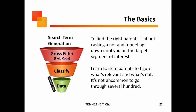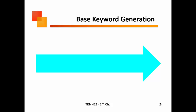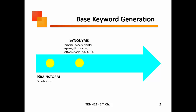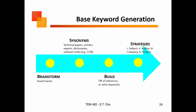It's not uncommon to go through several hundred patents. The basis of all patent searches are the keywords — this is the same thing with the web, the same thing with search engine optimization. You want to brainstorm search terms, figure out the synonyms, and what terminology might mean the same thing. That helps you pull out more information. There are actually software tools that can help with that, similar to AdWords for search engines — you can build off references from other keywords.